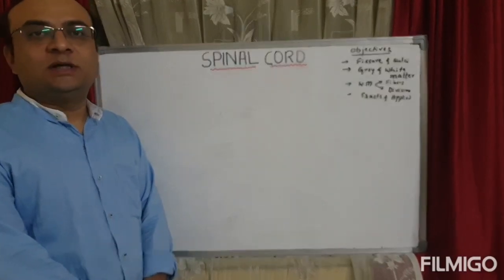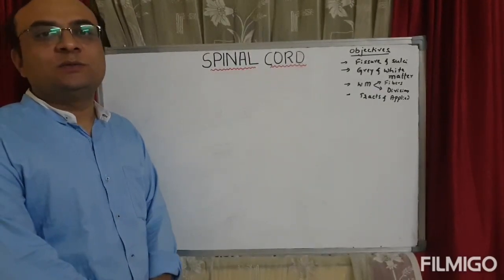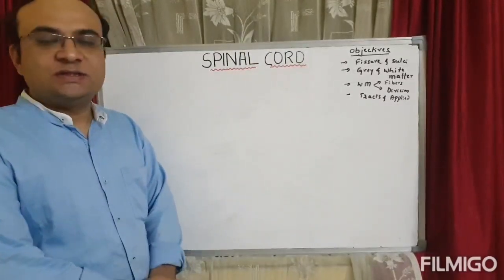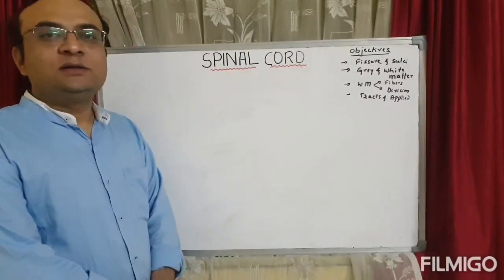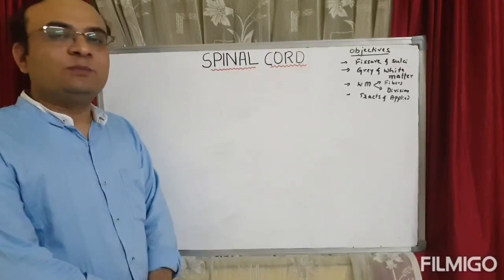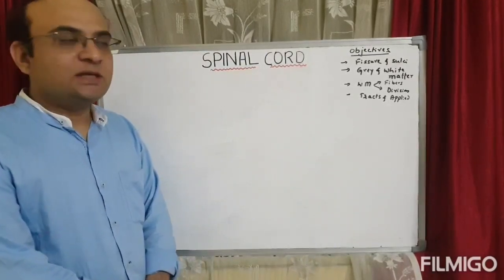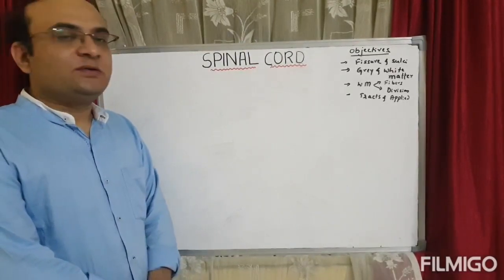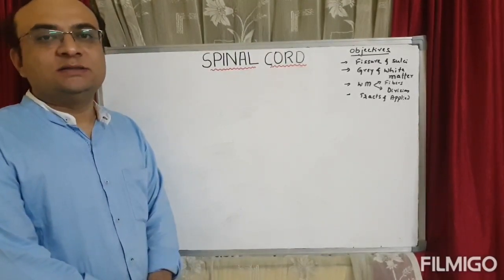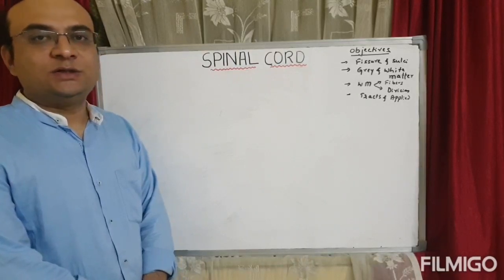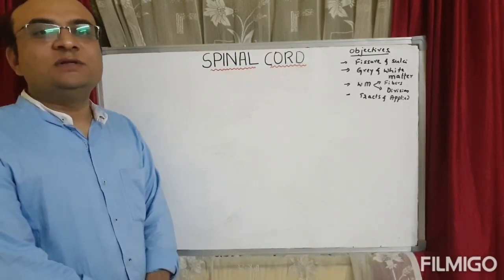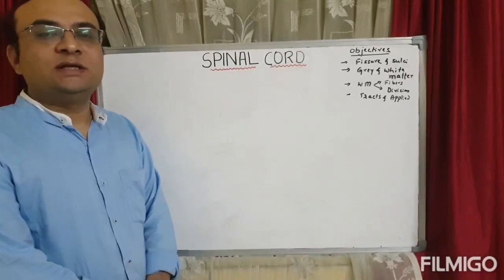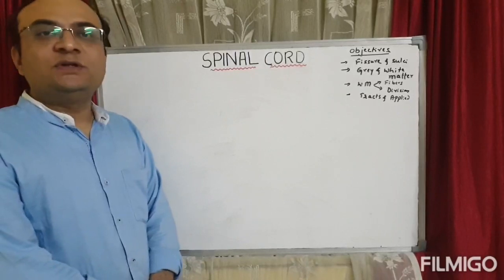We will discuss the spinal cord under the following headings: fissures and sulci, gray matter and white matter, types of fibers in the white matter, divisions of white matter, the important ascending and descending tracts with applied aspects. We will also see how to draw the cut section of the spinal cord showing both ascending and descending tracts.